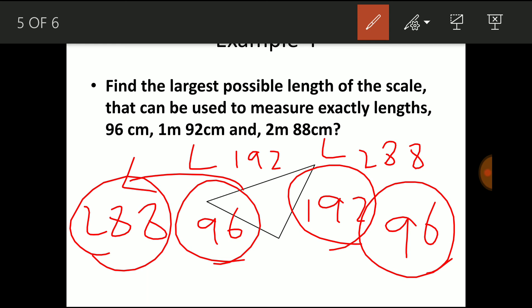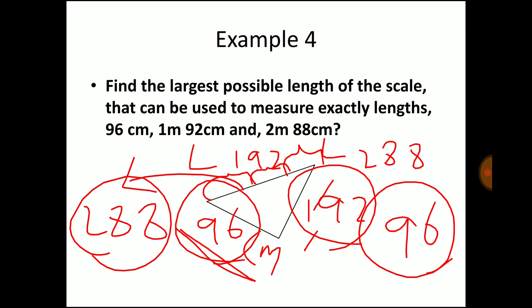You can keep the 96 cm scale and measure it for 1 time, and 192 cm size for 2 times, and you can keep the 288 cm size for 1, 2 and 3 times. So the largest possible length that can be used to measure these 3 sides is 96 cm and the answer lies in HCF. I hope you are clear with the application of HCF.